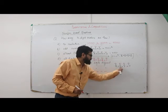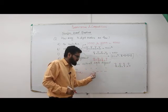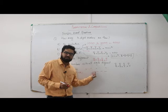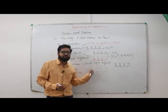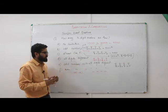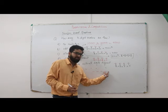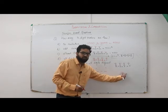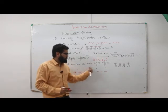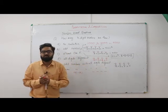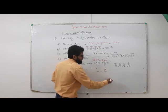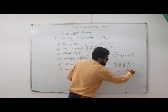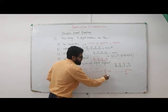For even numbers with all digits different, the units place can be 0, 2, 4, 6, or 8. We split into two cases: units place is 0 (one choice), or units place is 2, 4, 6, or 8 (four choices). These two cases are added together since they are separate scenarios.